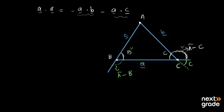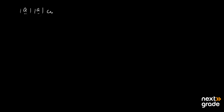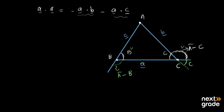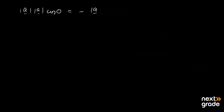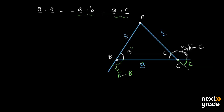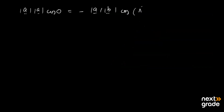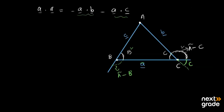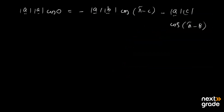Now: A·A = |a|² (same vector, angle = 0, cos 0 = 1). Then A·B = minus |a||b| cos(π minus c). The angle between A and B we found is π minus c. Next, minus A·C = minus |a||c| cos(angle between a and c), and that angle is π minus b. So we can write |a|² = minus |a||b| cos(π minus c) minus |a||c| cos(π minus b).